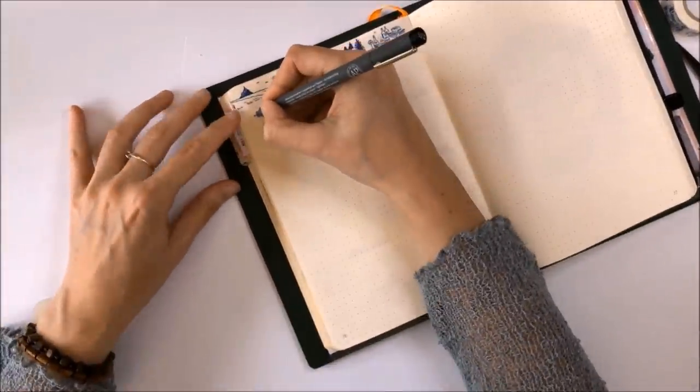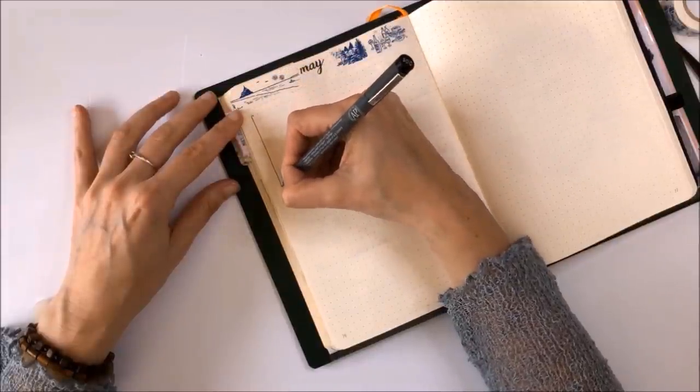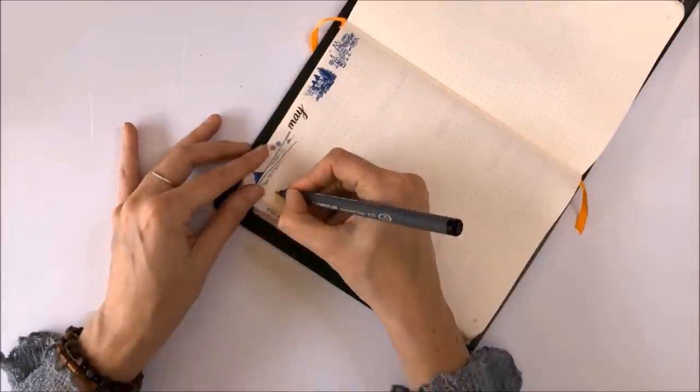Next up, I'm using a Staedtler pigment liner with a 0.05 nib to draw in two boxes at the top of my page.